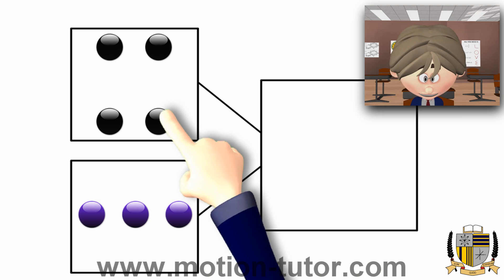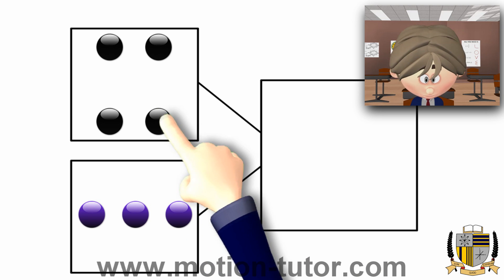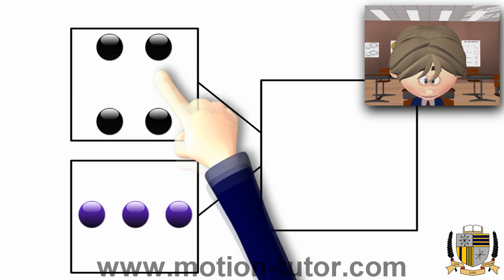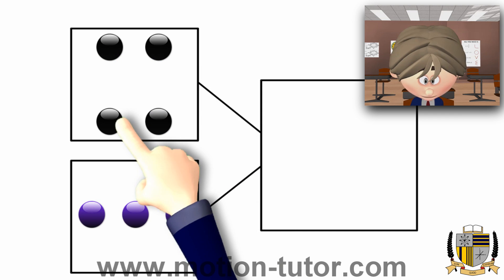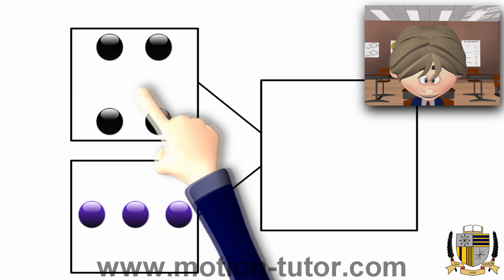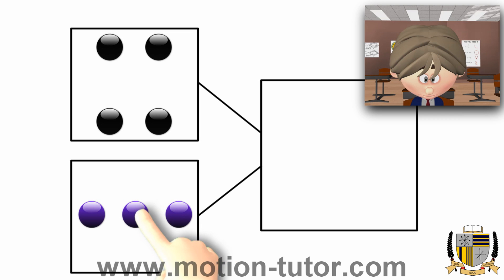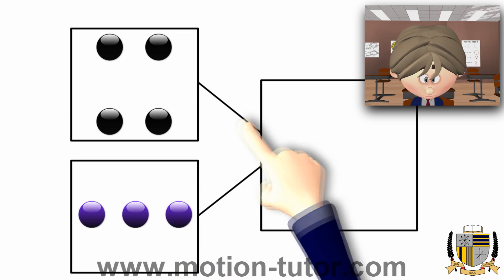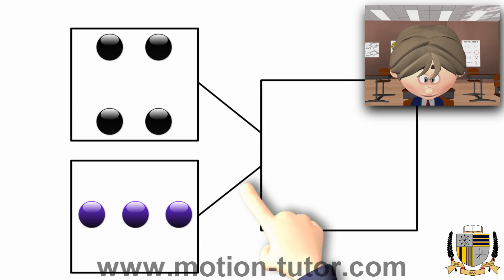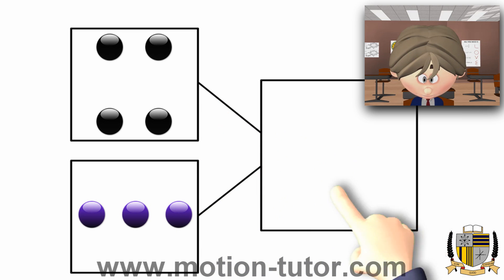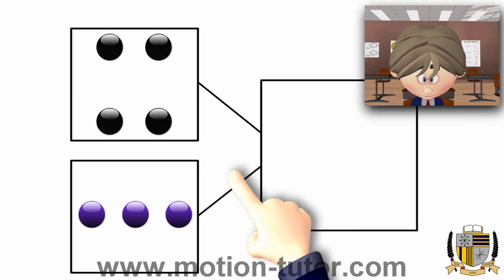Number bonds help us to see how numbers are put together. For example, we have 4 in this small box here and we have 3 in this small box down here. And if you look how they are connected, you would see that they lead into this bigger box.